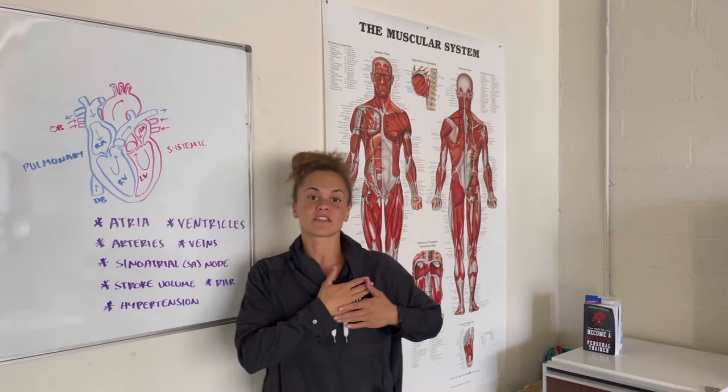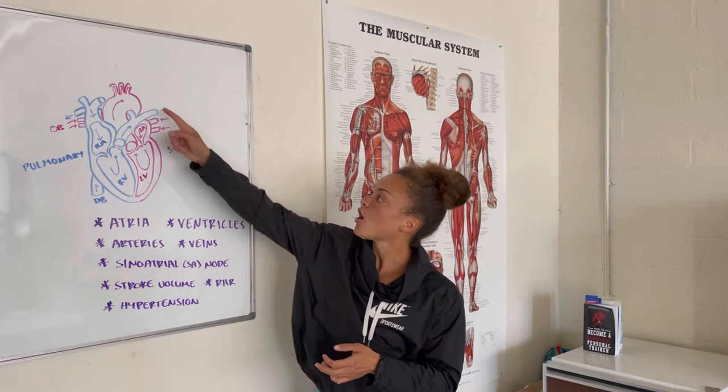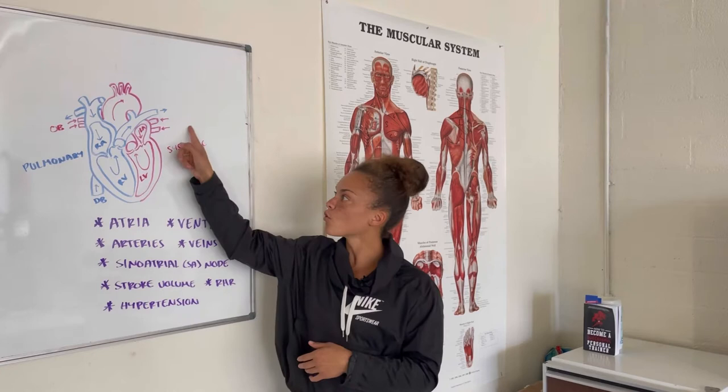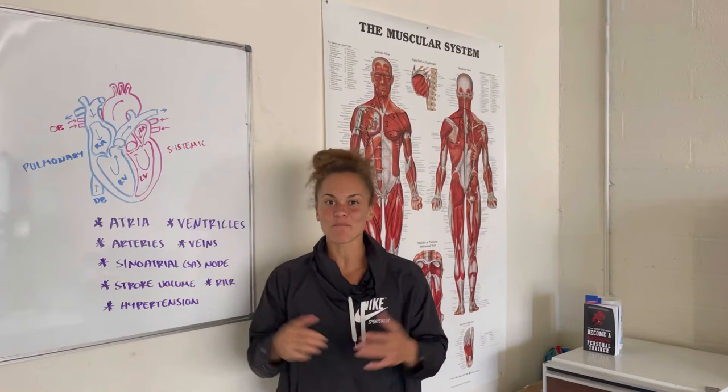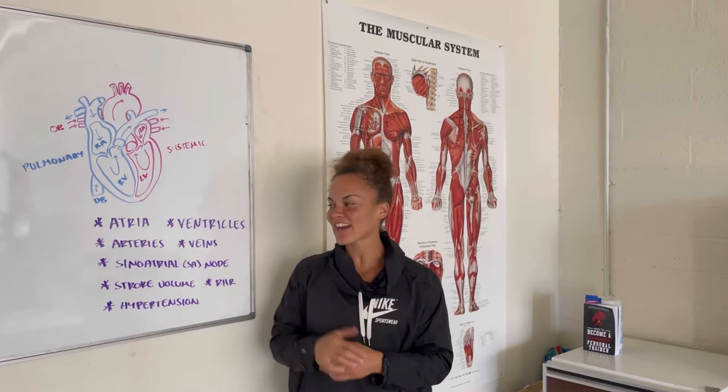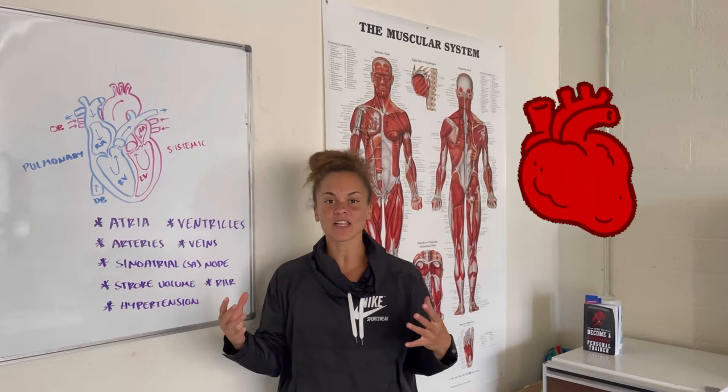Remember, the heart is on the left side of the body. From there, we'll talk about two specific blood vessels. Blood vessels that go away from the heart — A for away — are arteries. And blood vessels that go towards the heart are going to be your veins. We have a pacemaker of the heart, which is located in the right atrium, called your SA node, or your sinoatrial node. There's a term that refers to the amount of blood pumped out through each heart contraction, and that's going to be stroke volume.